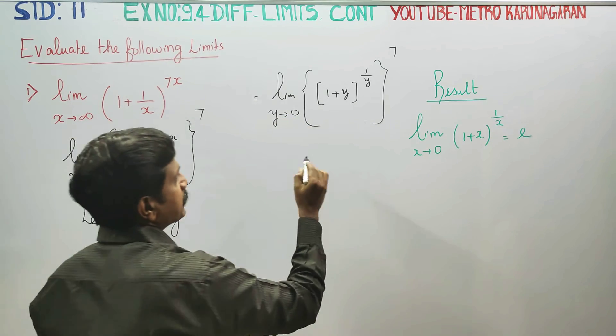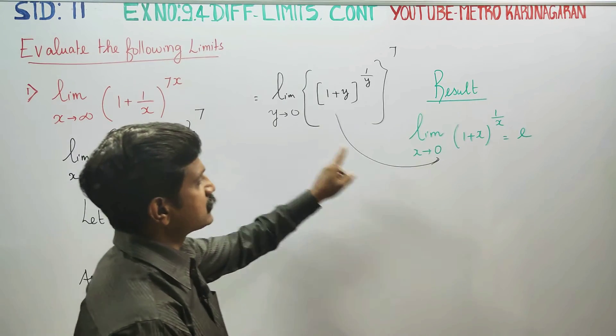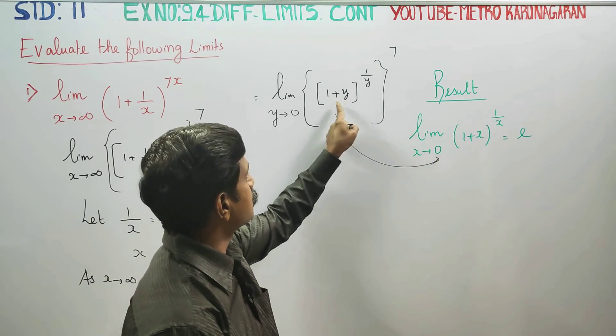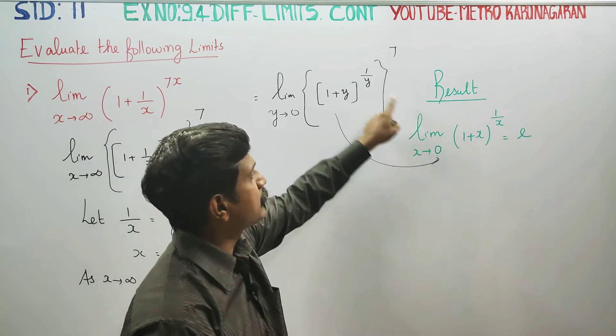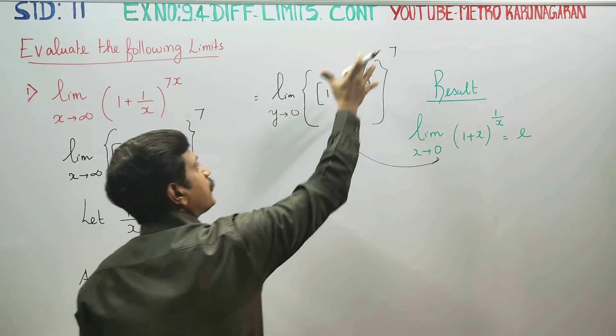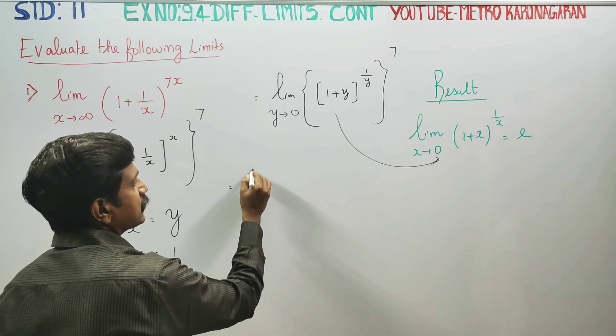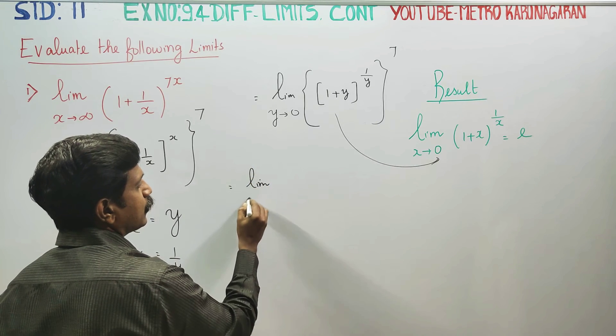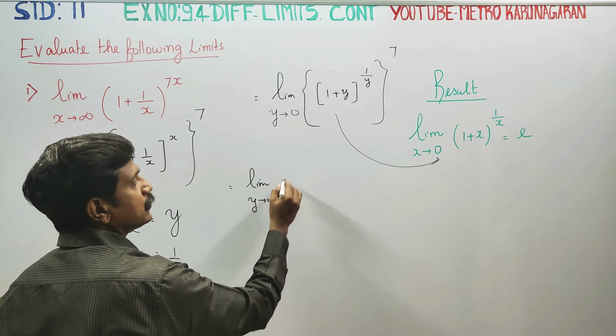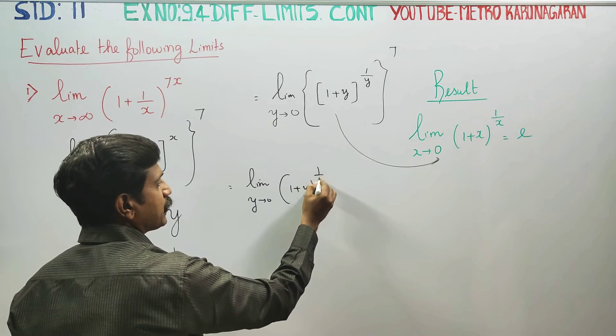If you look at this formula, as y turns to 0: limit (1 plus y) power 1 by y. This is the limiting case we use.